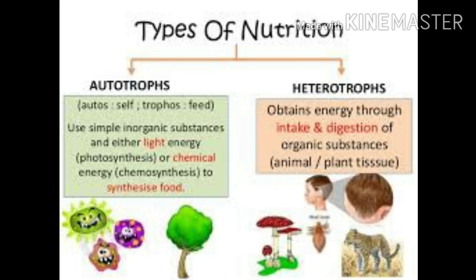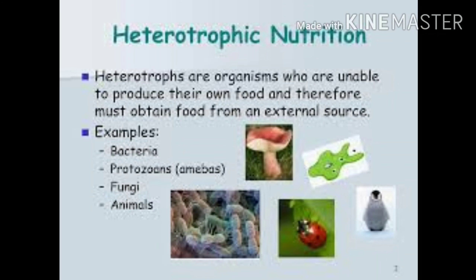Autotrophic nutrition is the mode of nutrition where green plants make food themselves from simple substances. What is heterotrophic nutrition? Heterotrophs are organisms who are unable to produce their own food and therefore must obtain food from an external source. For example, bacteria, fungi, animals, we human beings — we all are heterotrophs.